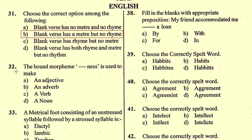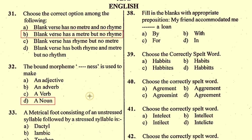Question number 32: The bound morpheme '-ness' is used to make — here bound morphemes play an important role. By adding the bound morpheme '-ness' to an adjective, we can change it into a noun. So the right option will be D, a noun.